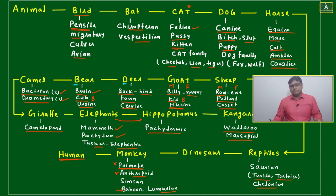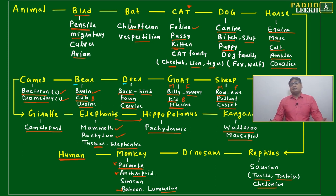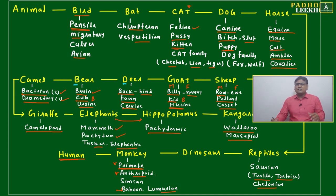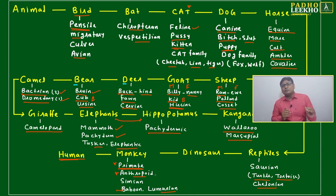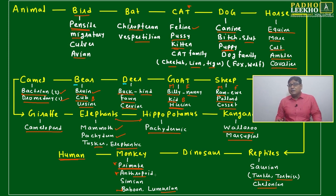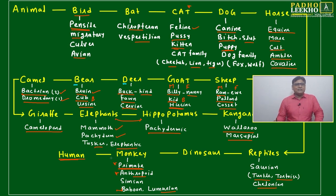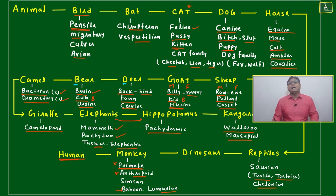Monkeys are considered our ancestors — from monkeys only we have developed. But the irony is we don't have any clear link between monkey and human. If you are standing on the fifth floor of a building, you can understand what the fourth floor is and see where the ground is. But just suppose there is no connection between the ground and the fifth floor — can we believe we are on the fifth floor? It is difficult.